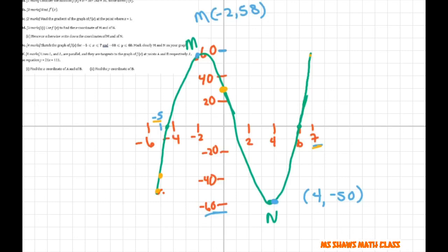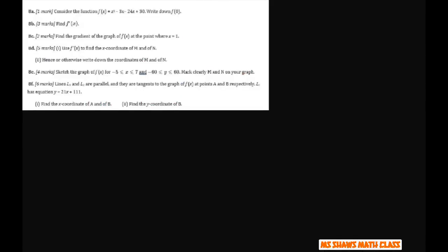And finally, we're going to have to do the last question. So basically it said lines L1 and L2 are parallel and they are tangent to the graph at points A and B respectively. So this is L1, L2. L1 has the equation of y equals 21x plus 111. So basically for f prime, we have 3x squared minus 6x minus 24 equals, and what you want is 21.